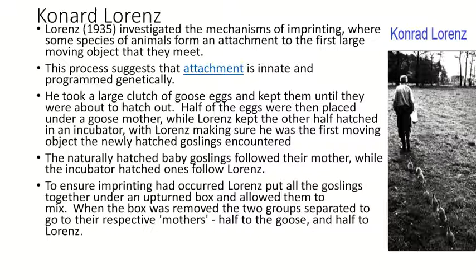Lorenz was trying to see whether imprinting naturally occurs. He observed that the naturally hatched baby goslings followed their mother, because according to imprinting, the organism follows the first moving object it sees. The 50 eggs kept under the goose mother saw her as the first moving object and followed her, while the incubator-hatched goslings followed Lorenz. You can see in the picture Conrad Lorenz moving and the goslings walking behind him. To ensure imprinting had occurred, Lorenz put all the goslings together under an upturned box and allowed them to mix. When the box was removed, the two groups separated to go to their respective imprinted figure — half to the goose and half to Lorenz. This was a very important experiment done by Conrad Lorenz.